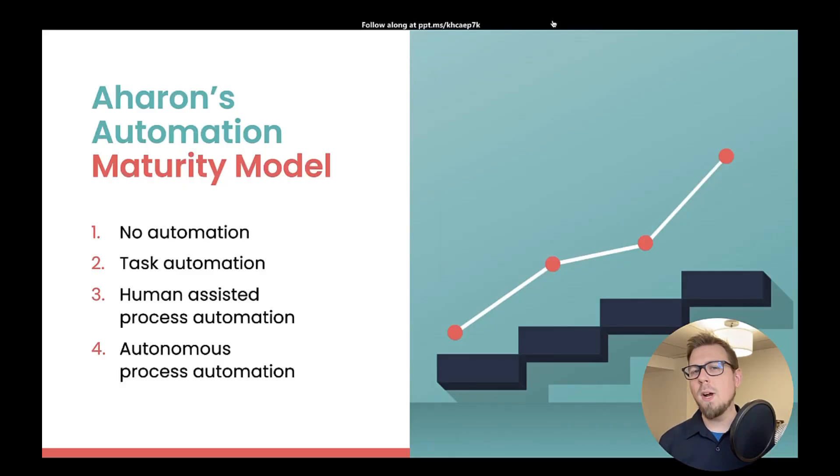All right, so let's talk about a well-known example for automation that almost everybody uses. And that example is light.